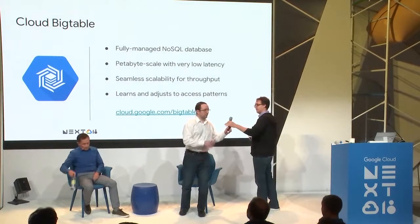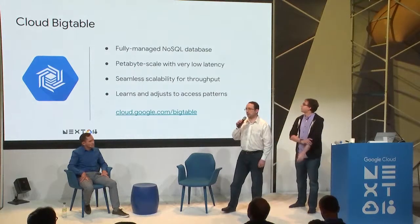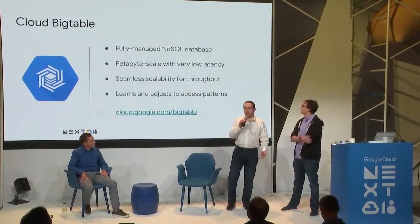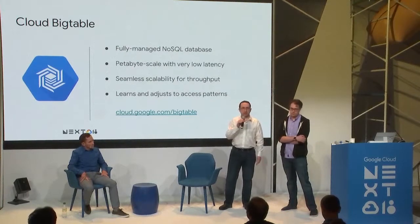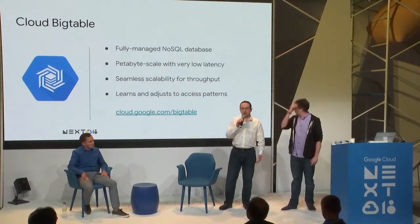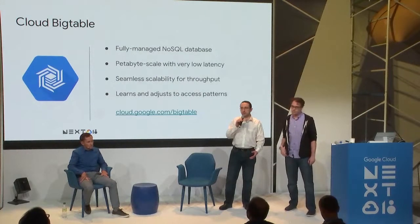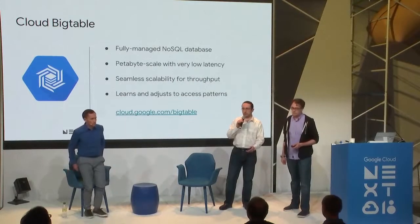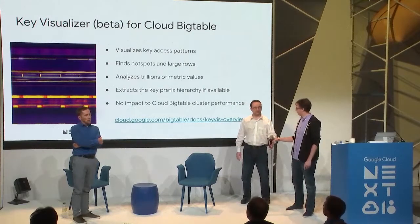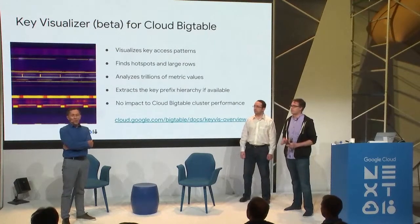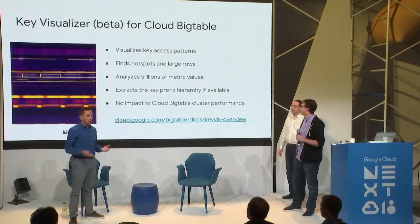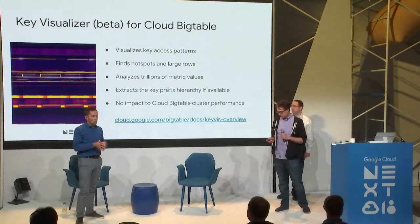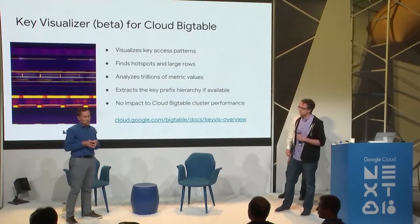As you've seen, Twitter was able to use Bigtable at the scale Twitter needs to serve their ads analytics. Bigtable provides a fully managed NoSQL database for time series, user analytics, and other use cases. It provides petabyte-scale storage, high throughput and low latency for random access, and seamless scalability to handle increases in load while adjusting to access patterns. Key Visualizer is now in beta for Cloud Bigtable — it visualizes key access patterns, helps find hotspots and large rows, analyzes trillions of metric values, extracts the key prefix hierarchy, and has no performance impact on your cluster.